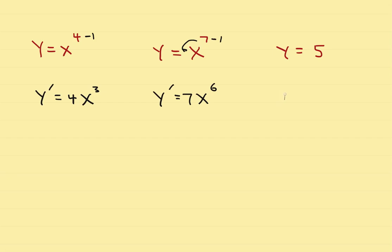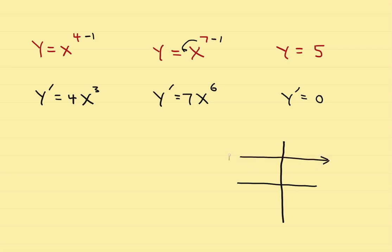Now if you have a constant, the derivative of a constant is always 0. To see why, if I had the line y equals 5, that's a horizontal line. The derivative is the slope of the tangent line, and a horizontal line always has a slope of 0, so no matter where you are, the slope is going to be 0.